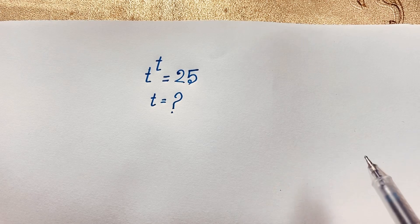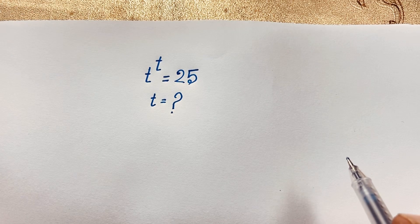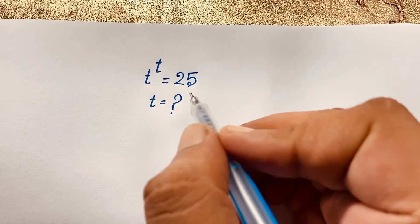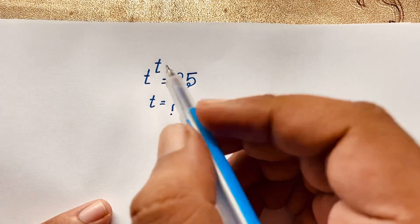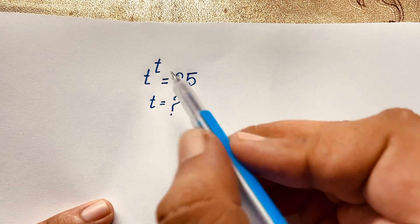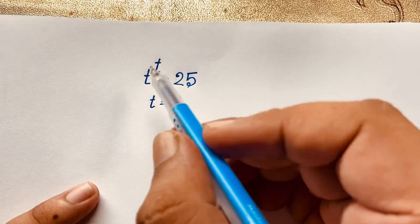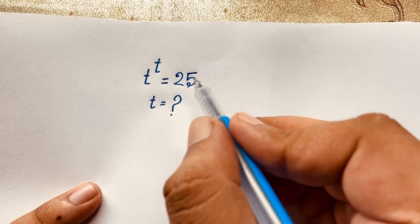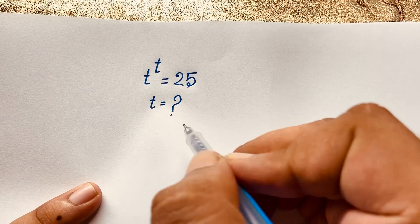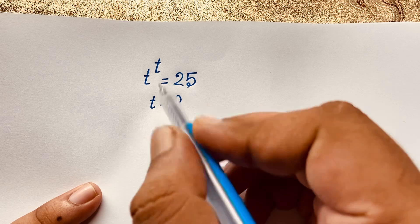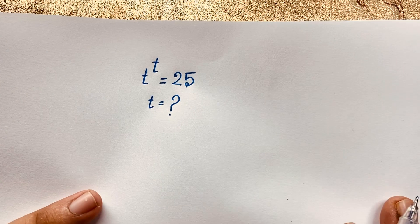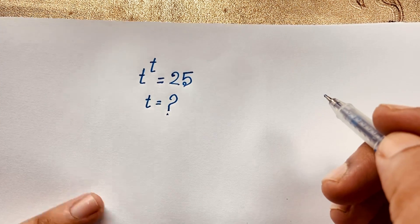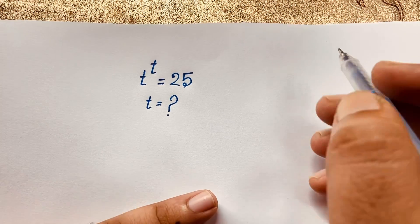Hello everyone, welcome to Russell's Classroom. Today we have solved an interesting exponential math problem. The question is: t to the power of t is equal to 25 — what is t? We will solve this interesting math problem using an easy method.